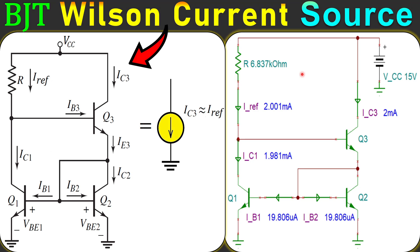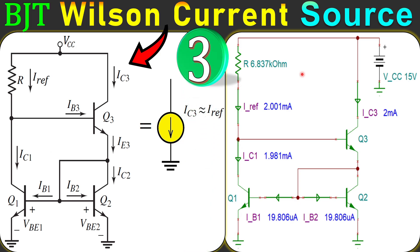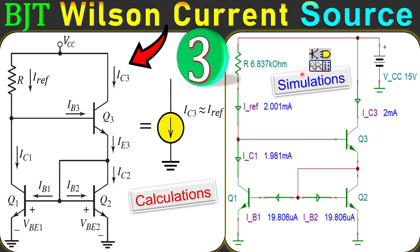Welcome back to a new video about current sources using BJTs. This is example number three: the Wilson current source, a special type of current source with high output impedance. It looks similar to example number two with three transistors and a beta helper, but the key advantage of the Wilson current source is its high output impedance, which is very important for specific applications. We'll see this in step-by-step calculations and verify in SPICE simulations.